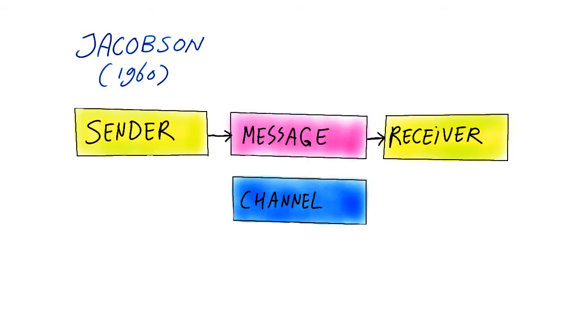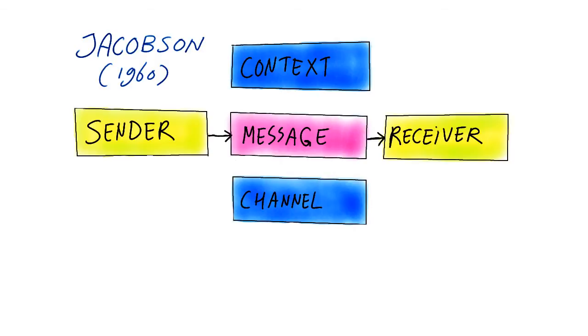He added to the model elements from semiotics, like the idea that every message refers to something outside of the message, which he called context. Also the specific form that our communication takes, for instance a written word made up of letters, is called a code.